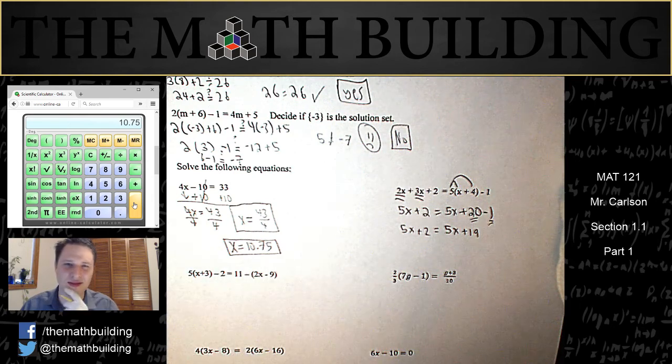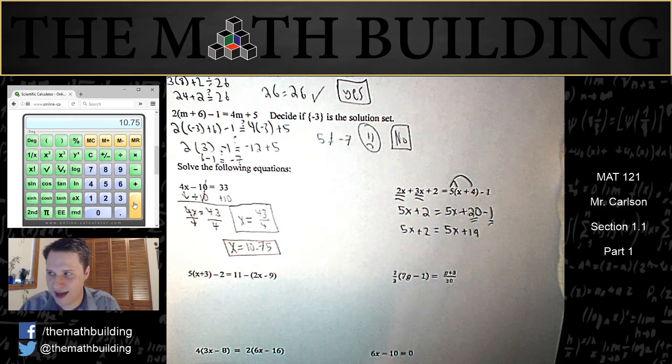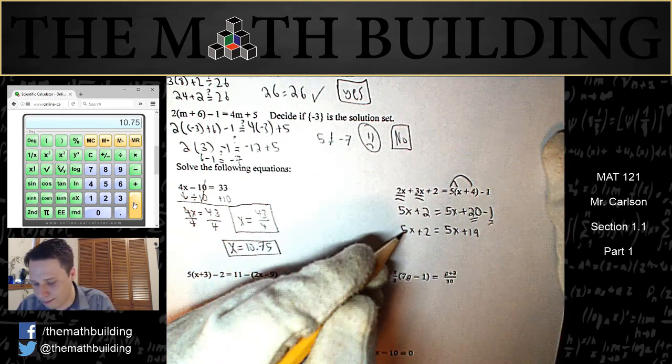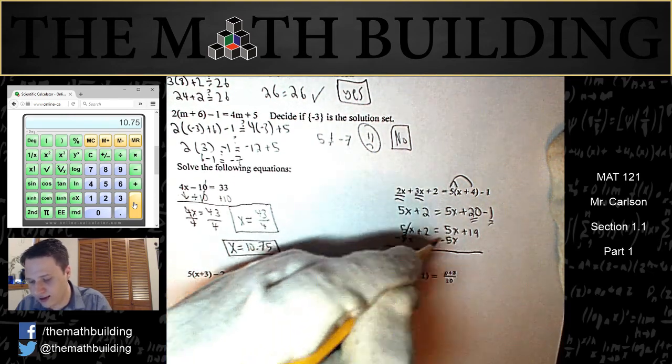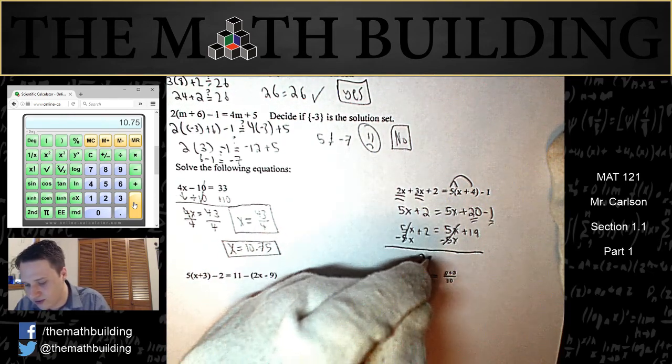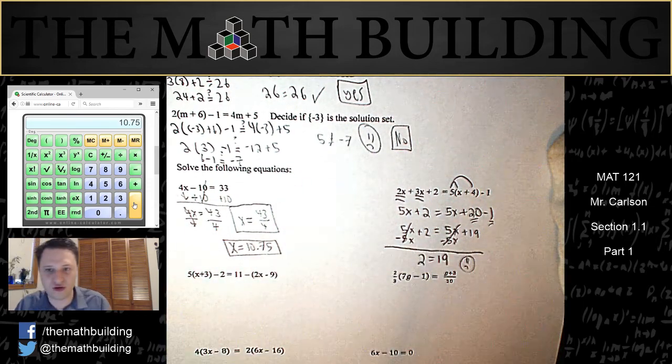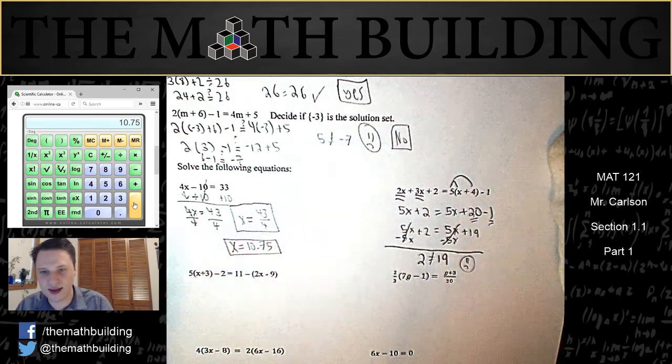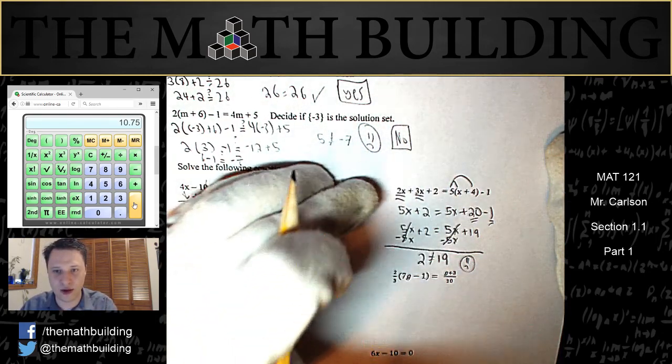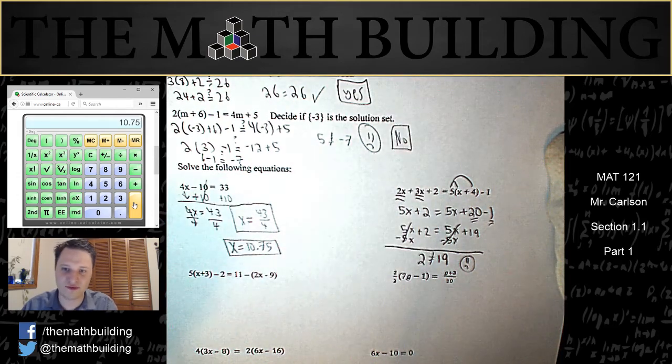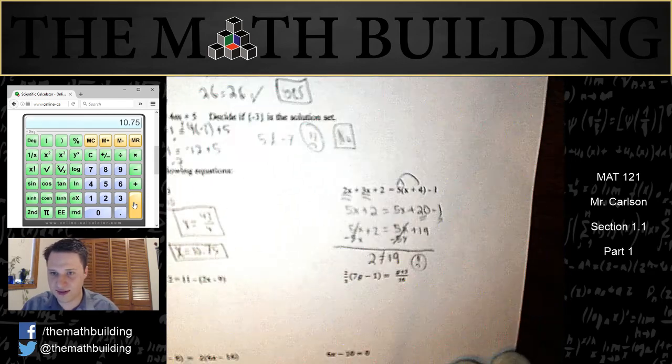Now you should think that this kind of looks a little strange here, because I have 5x on both sides of the equation. And sure enough, this is going to lead to a problem. Because if I subtract 5x on both sides to try to move all the x's over, they all cancel and I get 2 is equal to 19. Now we know this is not true. 2 is not equal to 19. That means that there is no value for x that will make this equation be true. There is nothing you can plug in for x to make that equation true. Therefore the answer to the equation is the empty set.